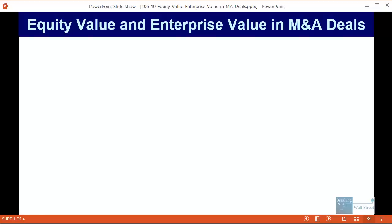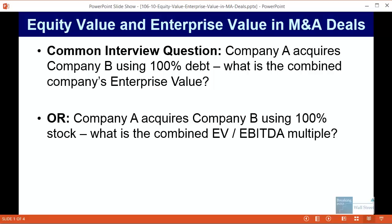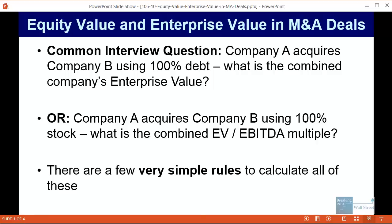A very common question in interviews is something like: Company A acquires company B using 100% debt — what is the combined company's enterprise value, or what is the combined company's equity value? Or they could say company A acquires company B using 100% stock — what is the combined enterprise value to EBITDA multiple? These questions may seem complicated, but there are actually a few very simple rules you can use to calculate all of these.